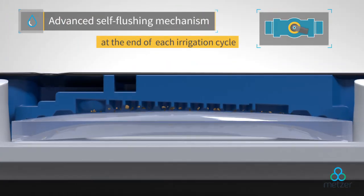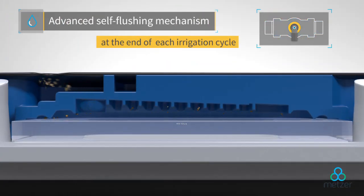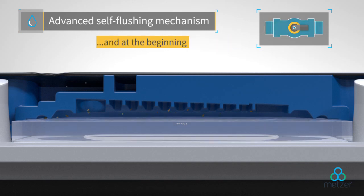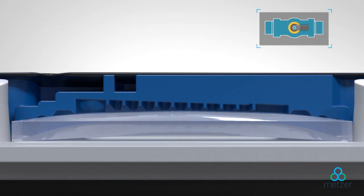The Varid PC Dripper's advanced self-flushing mechanism ensures cleaning at the end and the beginning of each irrigation cycle.